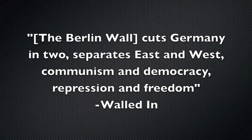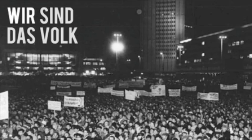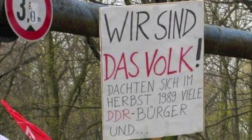On October 9, 1989, 70,000 protesters gathered in the city of Leipzig, the largest city in East Germany by population, shouting "Wir sind das Volk" — which translates to "We are the People" — implying that citizens should have more power in their government and should not be separated by the Berlin Wall. This was the first protest in the Peaceful Revolution, a series of non-violent protests against the Communist government in East Germany. The ultimate goal of these protests was not to overthrow the government, but to revise it.